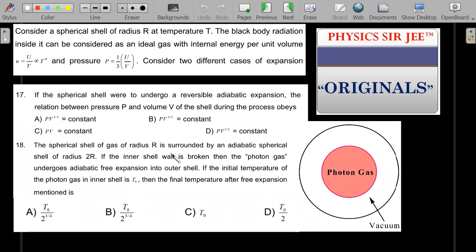Consider two different cases of expansion in the following problems. If the spherical shell were to undergo a reversible adiabatic expansion, the relation between the pressure P and volume V of the shell during the process obeys one of these four options: PV^(5/3), PV^(4/3), PV, or PV^(1/3) equal to constant, which you have to choose from.